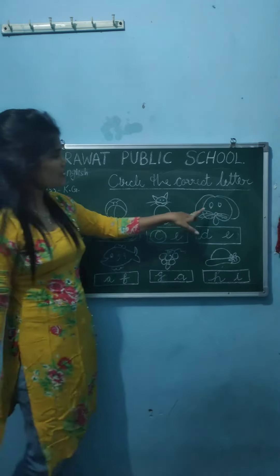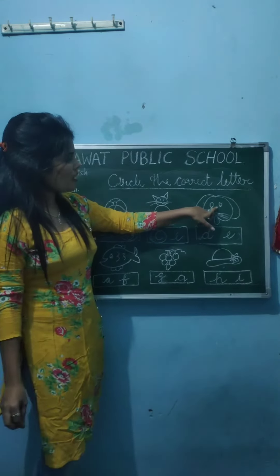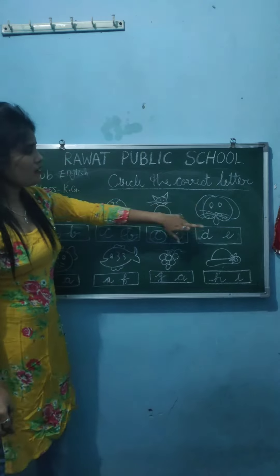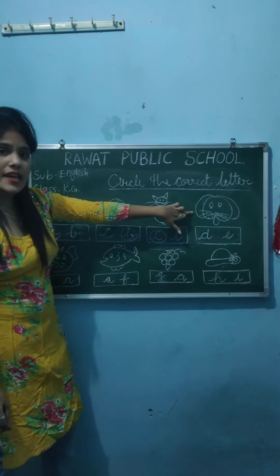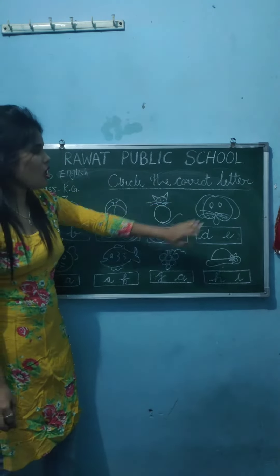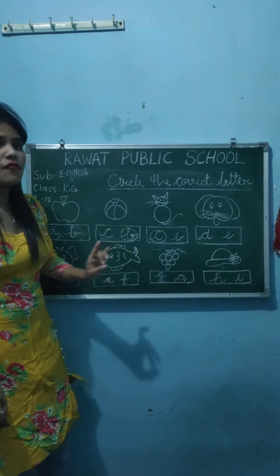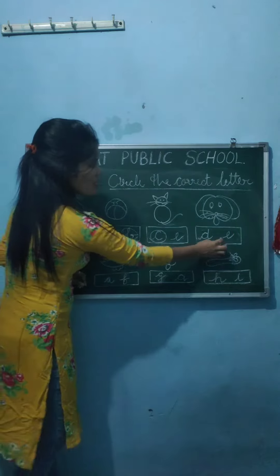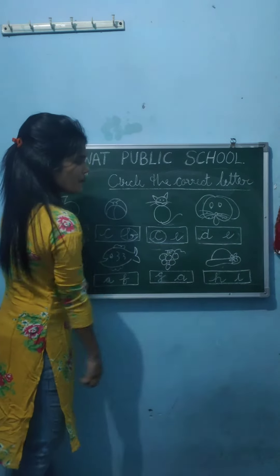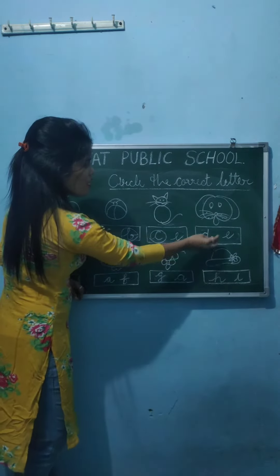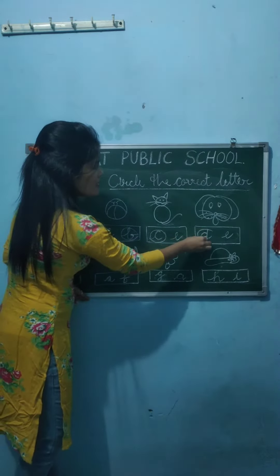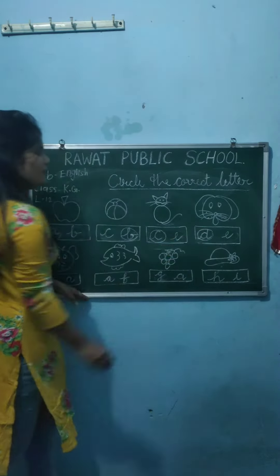Now next. What is this? This is dog. What is this? This is dog. D for dog. Which one is D? This one. Make a circle. Yes.